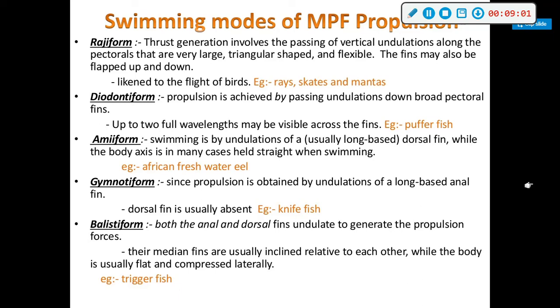Balistiform swimmers use both the anal and dorsal fins undulating to generate propulsion forces — for example, trigger fish.